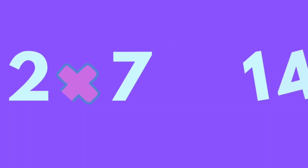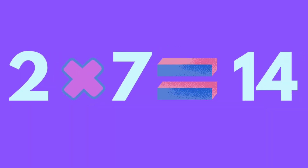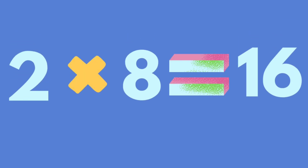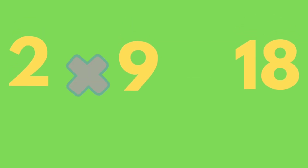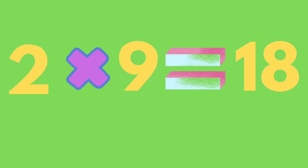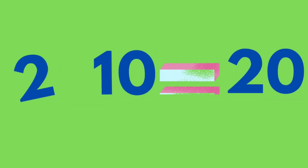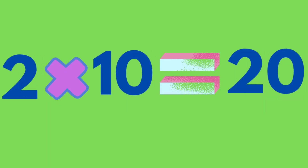2 times 7 is equal to 12. 2 times 8 is equal to 16. 2 times 9 is equal to 18. 2 times 10 is equal to 10. Let's see the summary.